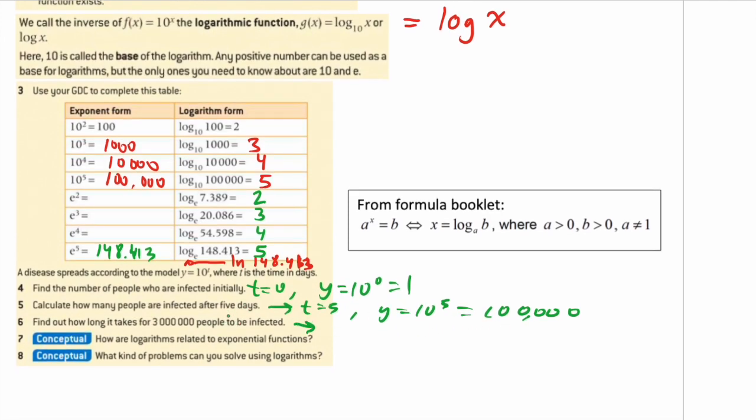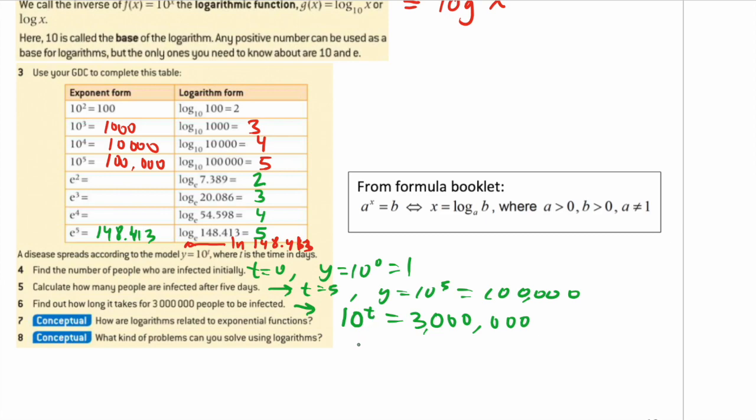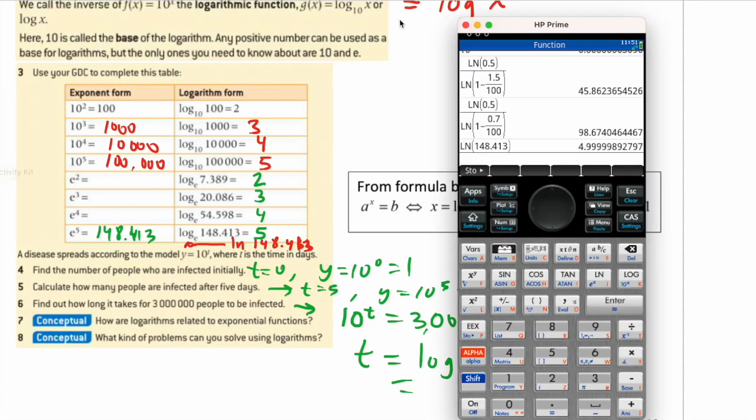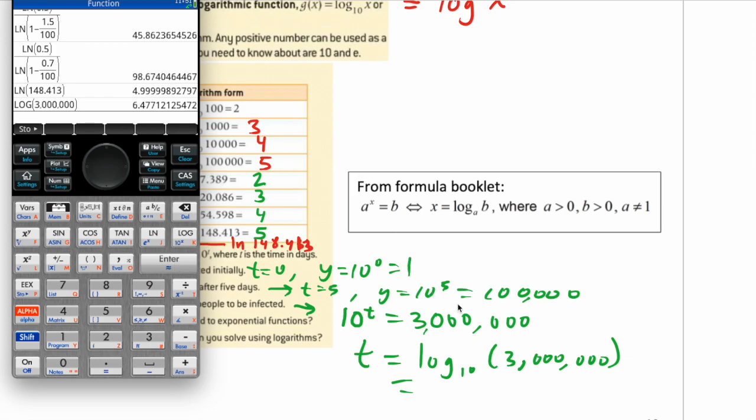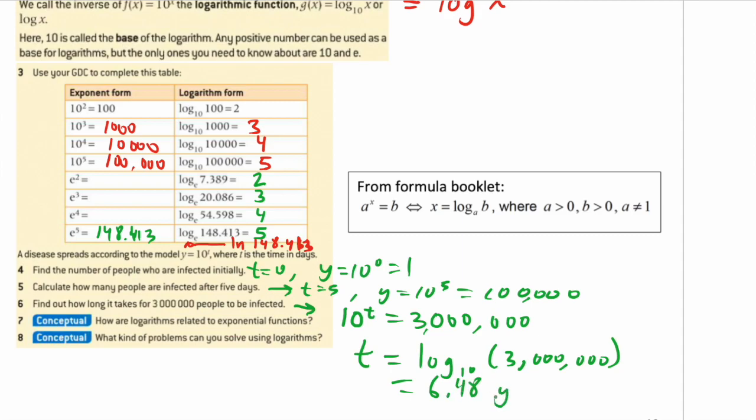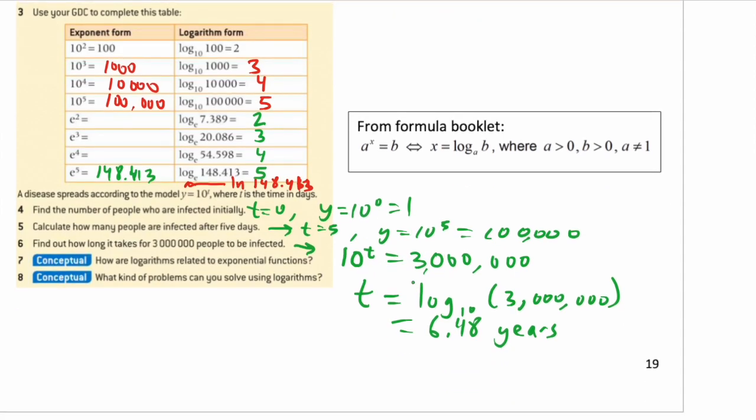How long it takes 3,000,000 people to be infected. Let's take a look at that. There's one way we can do it with a graph. But we can solve this equation by doing 10 to the power of t equals 3 million. We can also solve it with logs, because the inverse of this is a log. So using this formula in the formula booklet, t equals log base 10 of 3 million. So let's do that on our calculator. You get this log button here. Log means base 10 by default. So 3 million gives us 6.48 years. So you can use logs to solve these simple equations like this. You can also solve that by graphing.